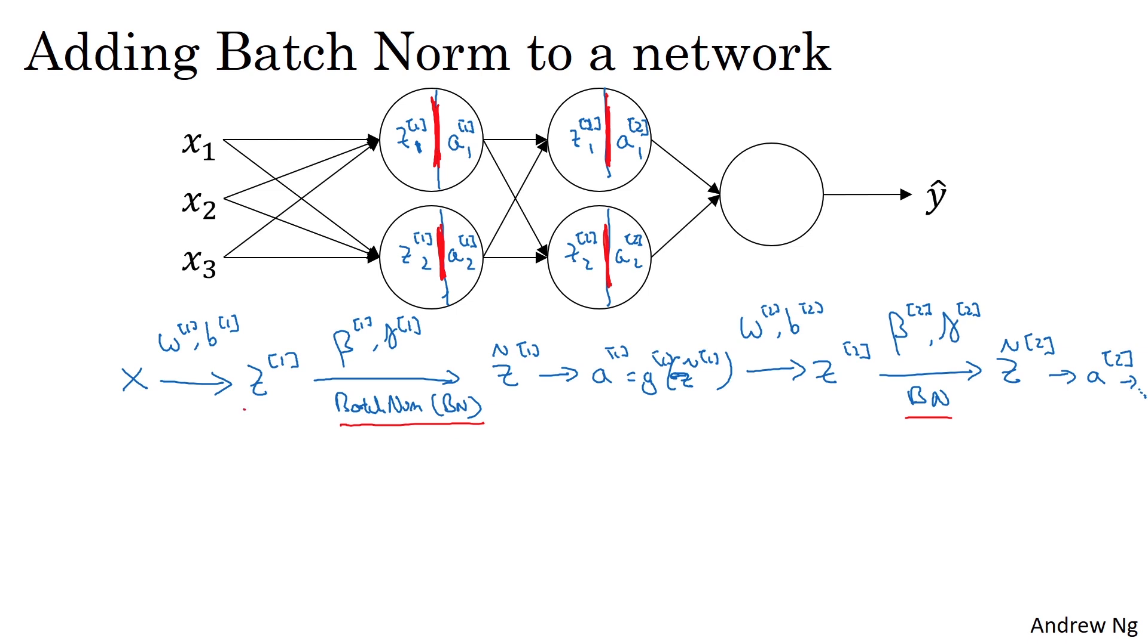The intuition is that instead of using the un-normalized value z, you're going to use the normalized value z tilde. That's in the first layer. In the second layer as well, instead of using the un-normalized value z2, you're going to use the mean and variance normalized values z tilde 2.